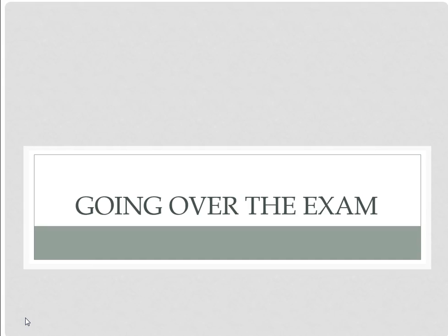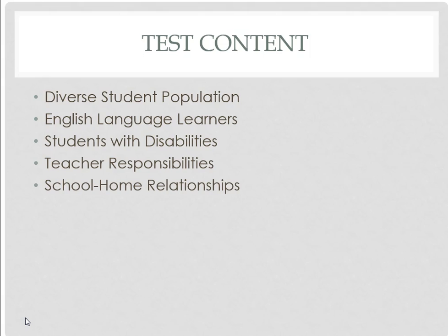Those three areas have just been very quickly overviewed. The way we've moved forward here at Sage is we have a course specifically designed that addresses all of these issues in detail. Here are the components of the Educating All Students exam. The test content addresses diverse student populations, English language learners, students with disabilities, teacher responsibilities, and school-home relationships — the three big areas that were discussed previously in this presentation, intertwined with teacher responsibility and school-home relationships.